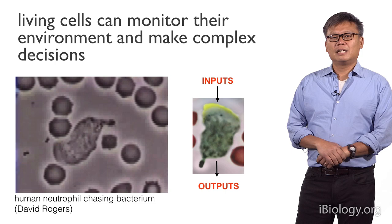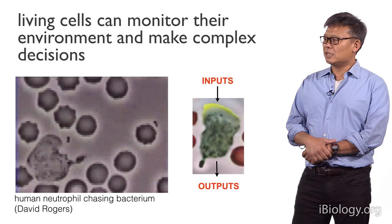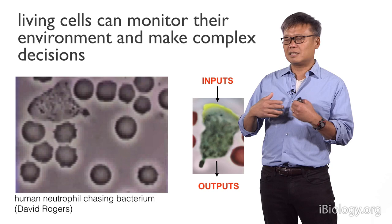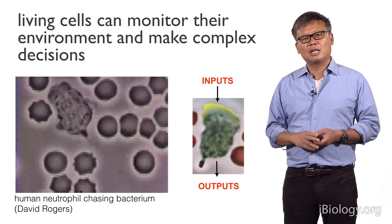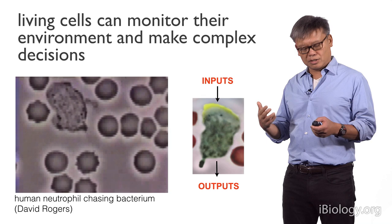One of the most amazing things about living systems is that they are able to monitor their environment and make complex decisions. An example is shown here — this is a classic film of a human neutrophil, a white blood cell, and you can see it's able to detect and chase that small little black dot which is a bacteria. So somehow it's detecting signals given off by that bacteria and it's using it to coordinate its entire cytoskeleton to give you this coordinated movement and eventually the phagocytosis of that bacterium.